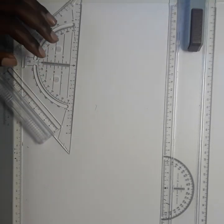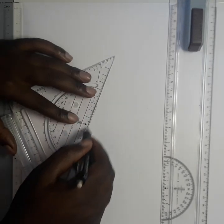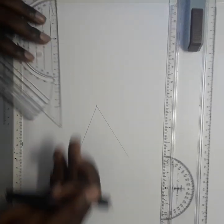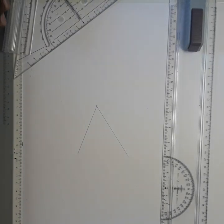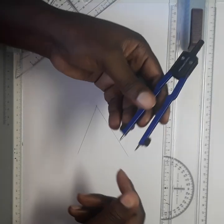Hello everyone, today I'm going to teach you how to bisect an angle. So let me just draw an angle here. First of all, take your compass with any radius.